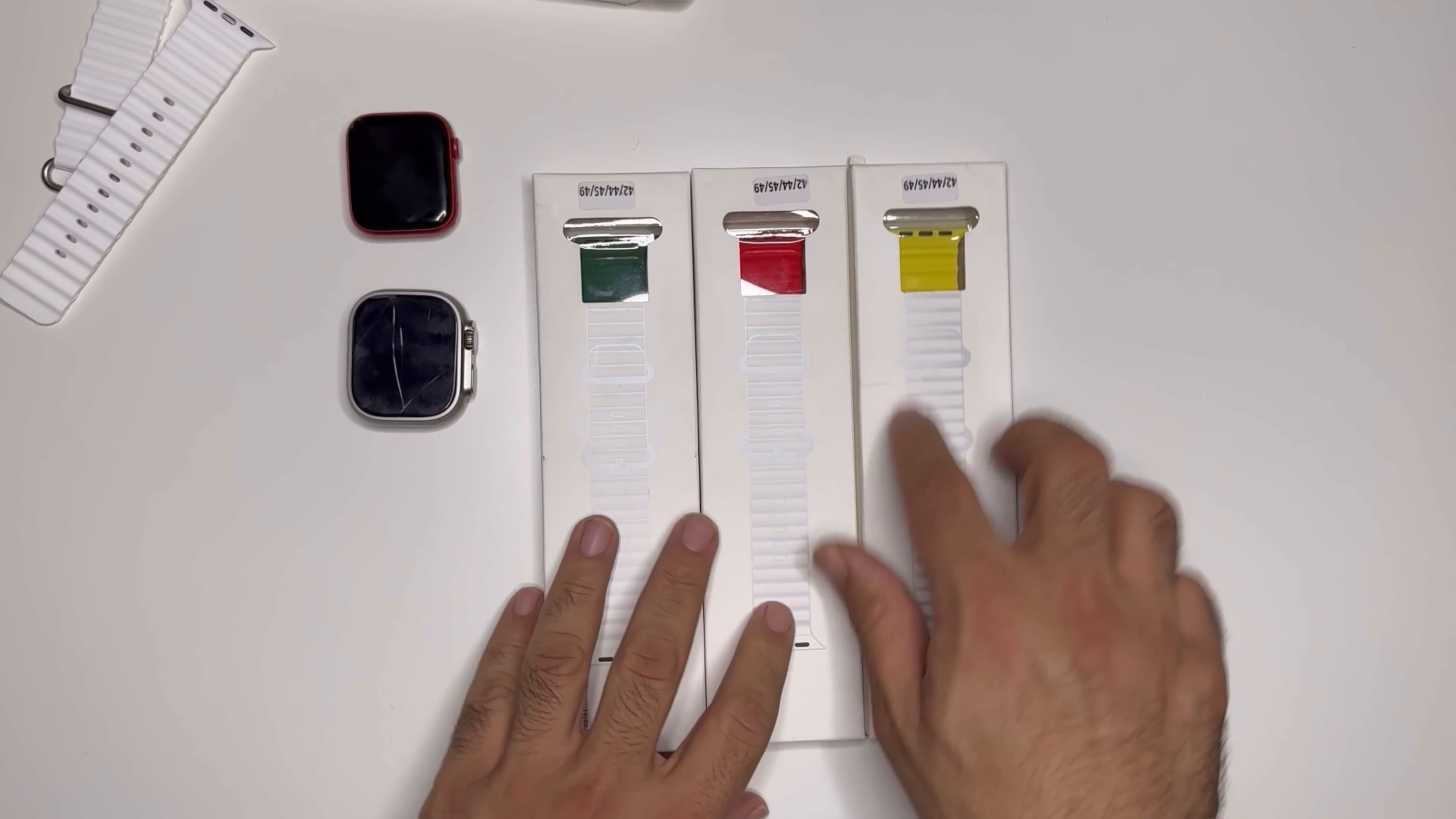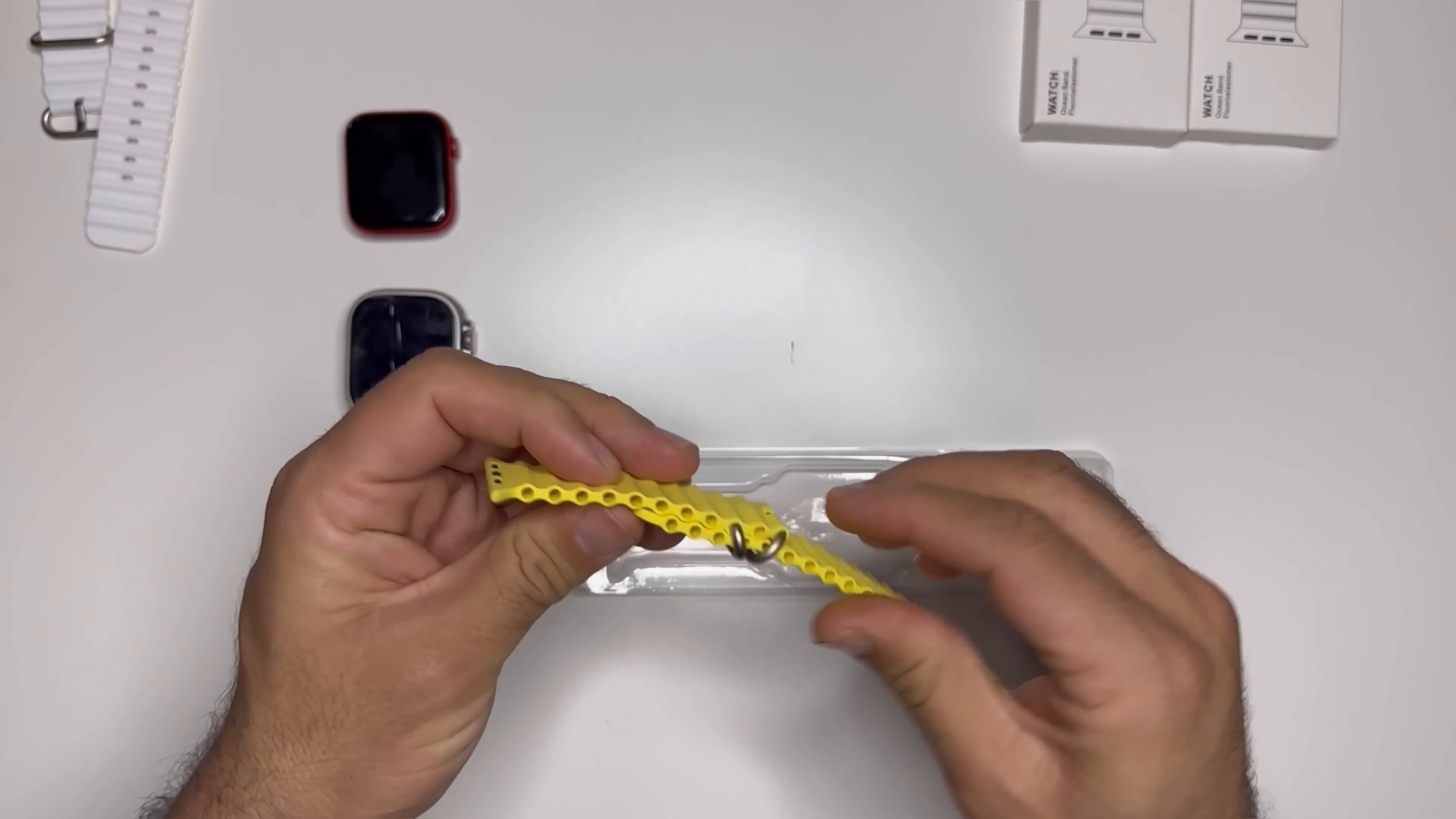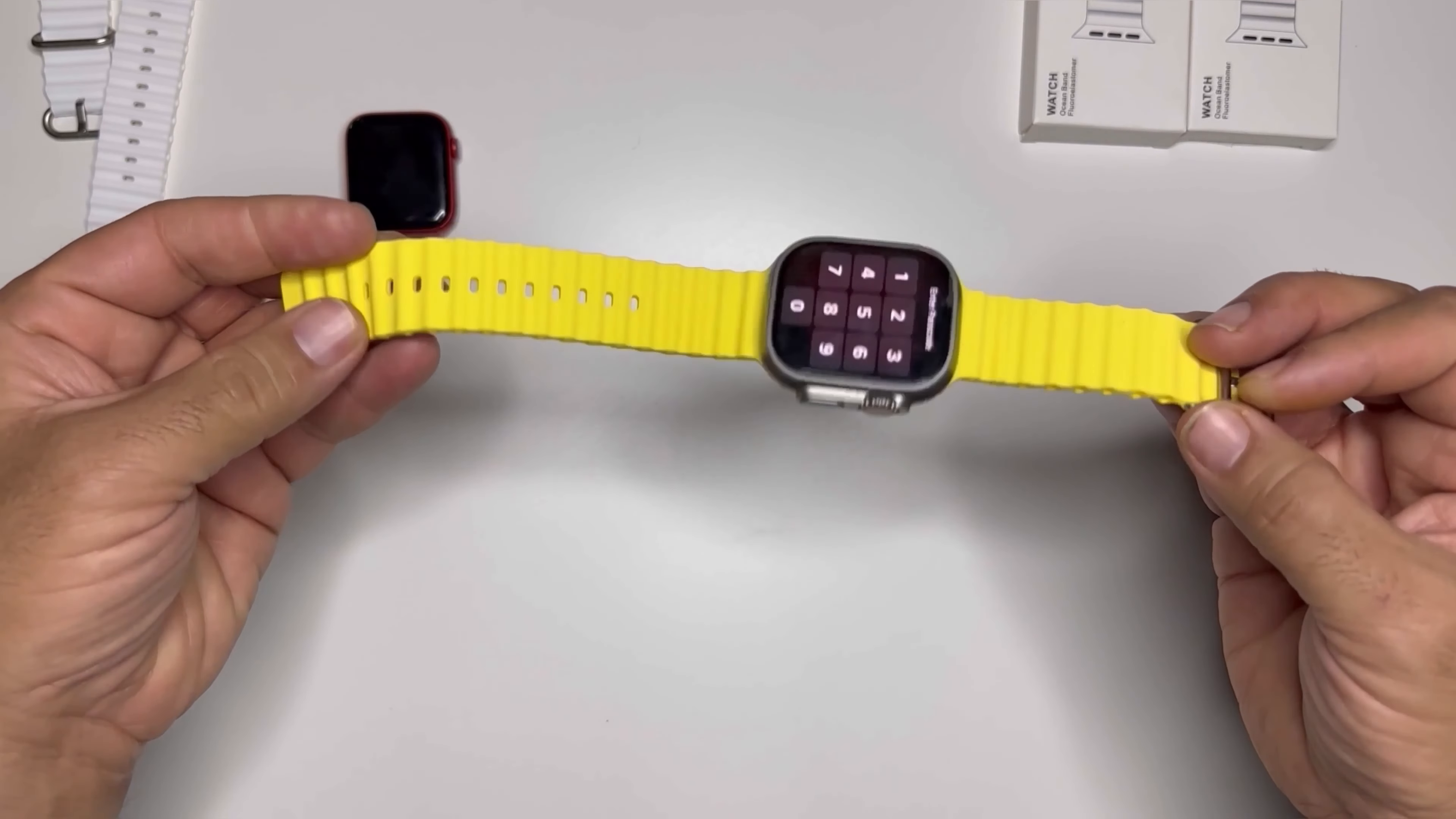Let's open the next one - yellow. I love the yellow. This color is officially available at Apple stores also. Yellow is nice, it's the same material. It slides in perfectly, that's it. Very easy, very convenient, and you can see that it looks beautiful. I really like it.